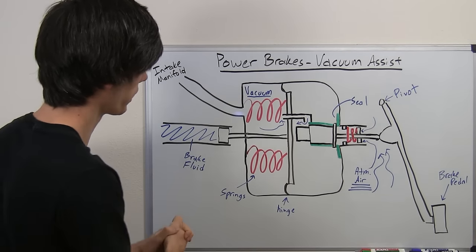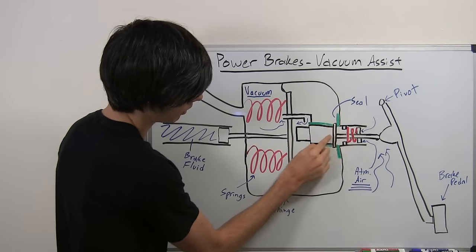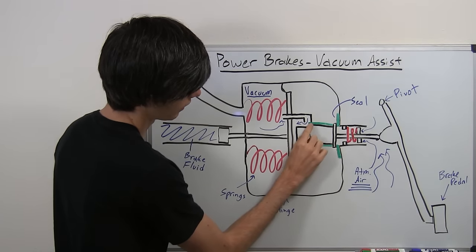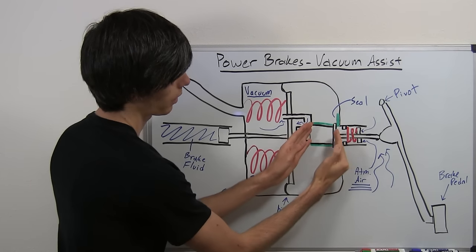So the real important thing here, basically, is just these two seals. So this black part here can move forward, and this green part here is going to seal off this hole, and that happens simultaneously.